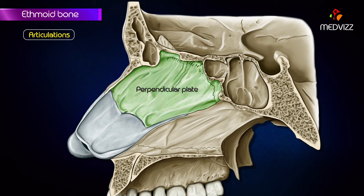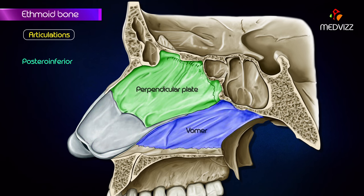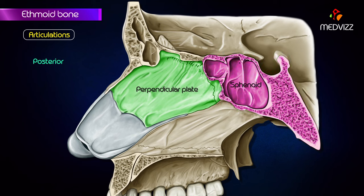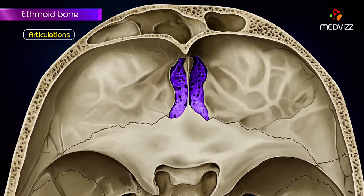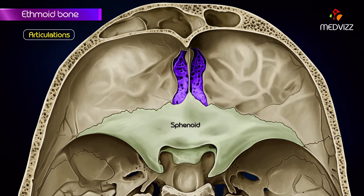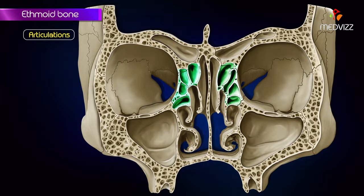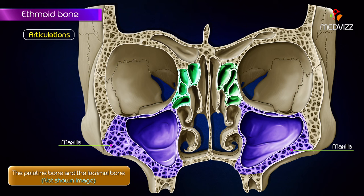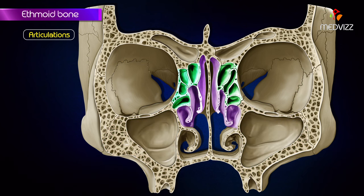The perpendicular plate of the ethmoid bone articulates anterior-inferiorly with the septal cartilage of the nose, posterior-inferiorly with the vomer, anteriorly with the frontal and nasal bones, and posteriorly with the sphenoid. The cribriform plate articulates laterally with the orbital plate of the frontal bone and posteriorly with the sphenoid. The labyrinth articulates above with the frontal bone, posteriorly with the sphenoid, and laterally with the maxilla, the palatine bone, and lacrimal bone. The medial aspect of the labyrinth gives attachment to part of the inferior nasal concha.